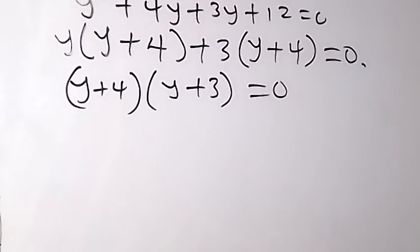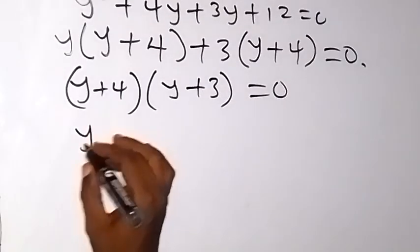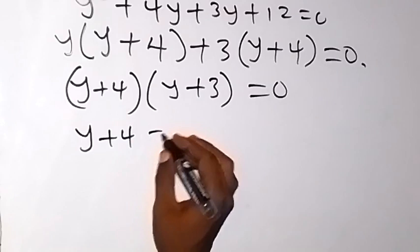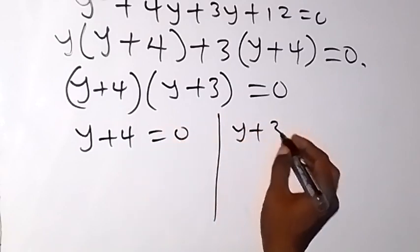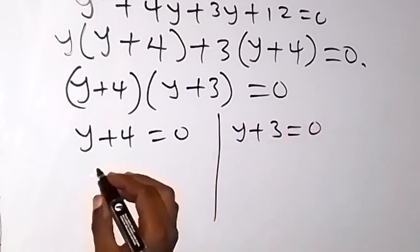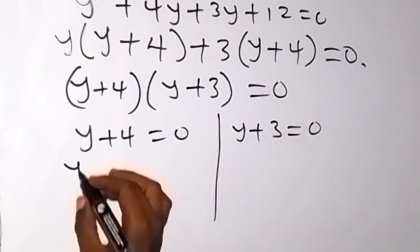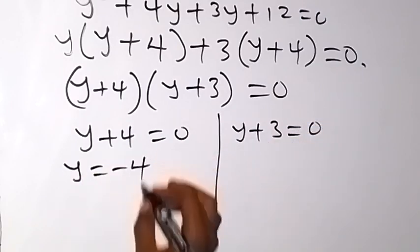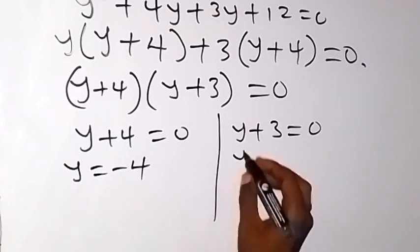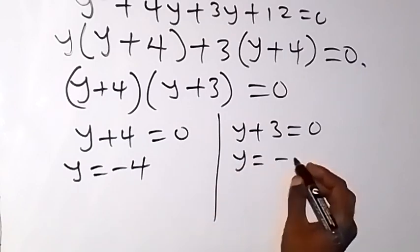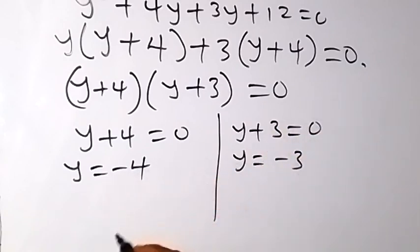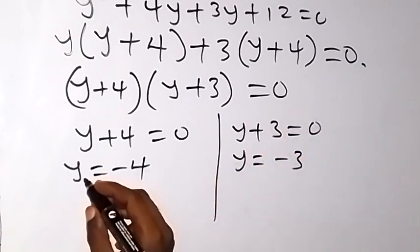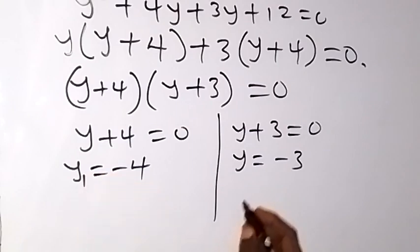Either of these could be 0 now. We have y plus 4 equals 0, or we have y plus 3 equals 0. From here, when we solve for this, we have y equals minus 4. And from here, we have y equals minus 3, taking plus to the other side. Let's call this one the first value of y, and the second value of y, y2.